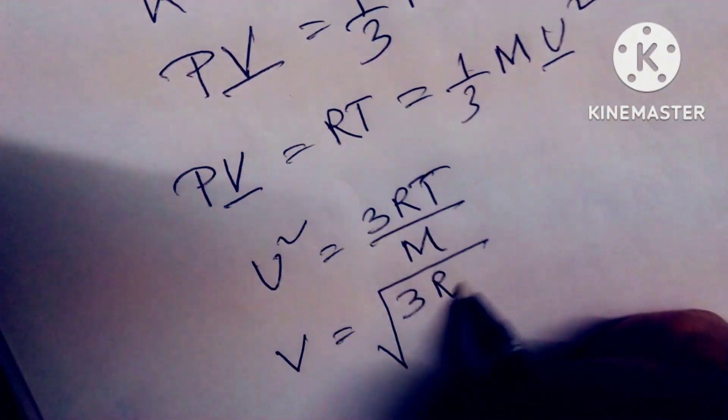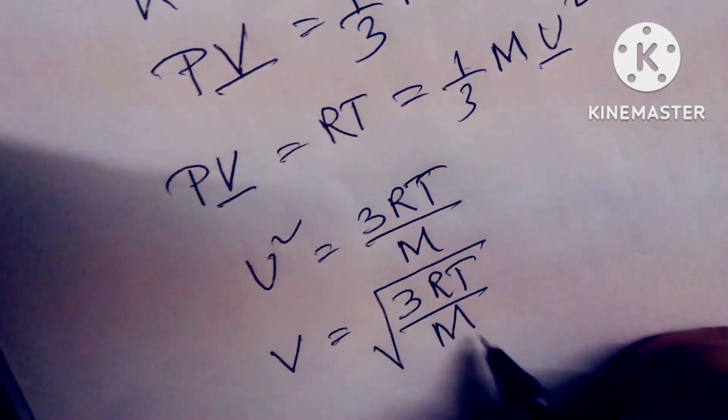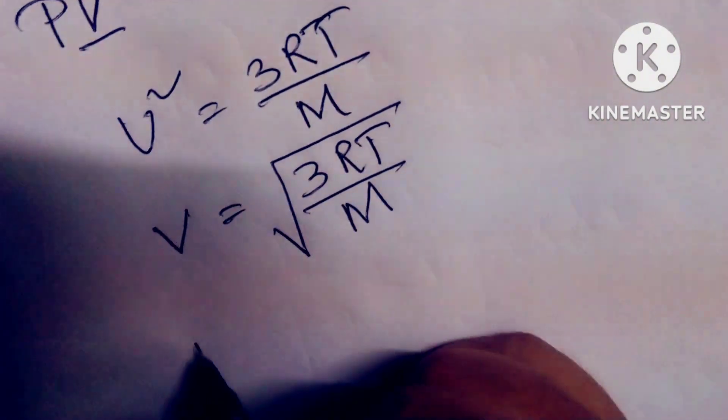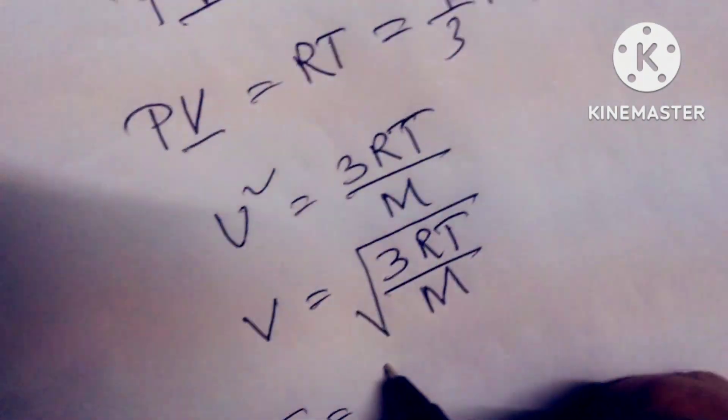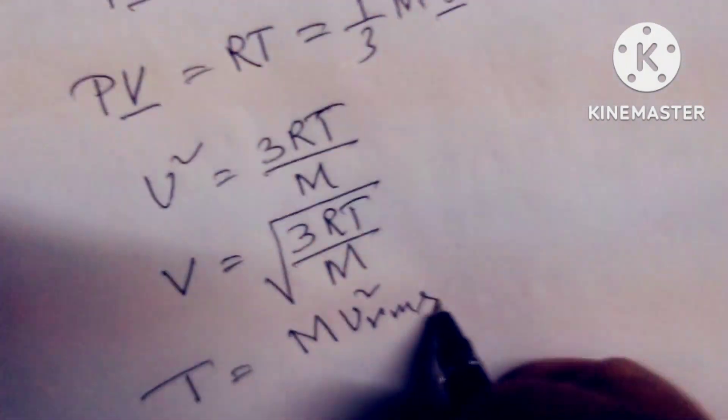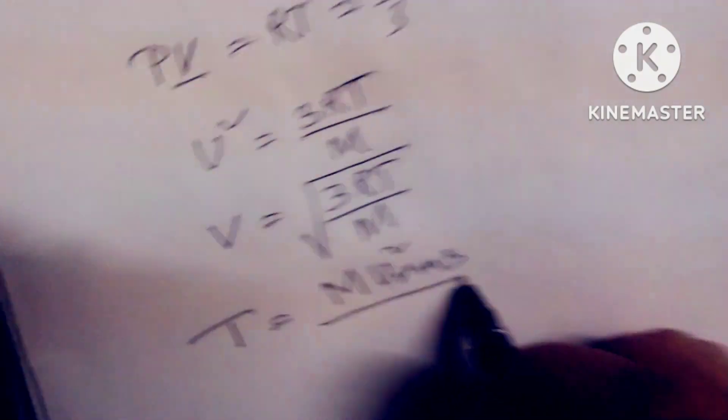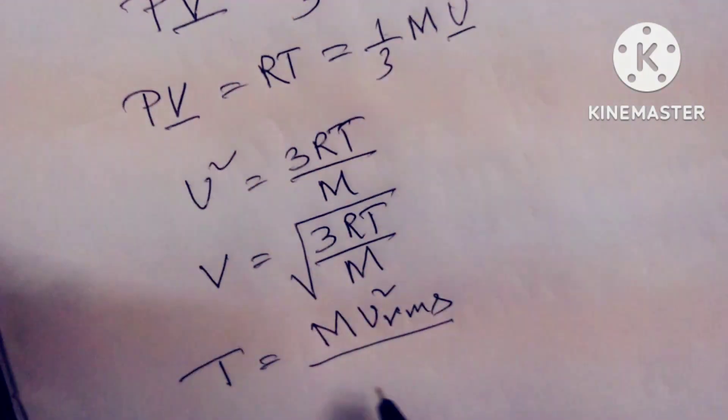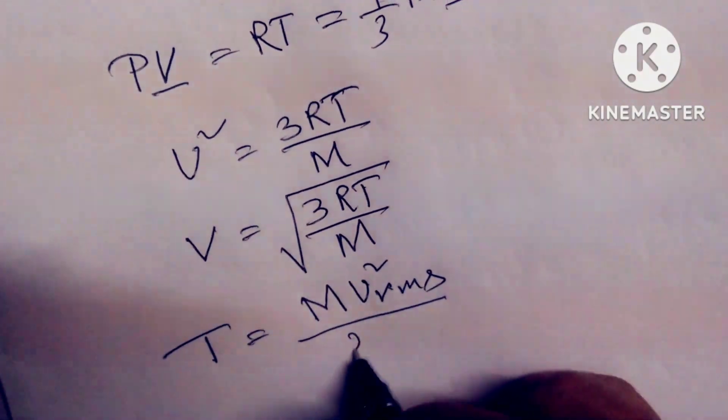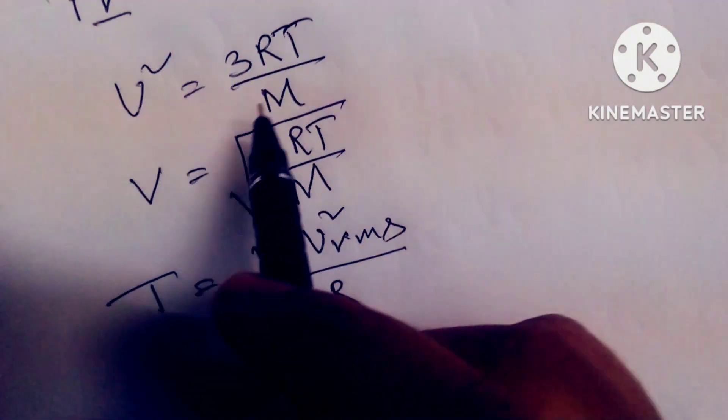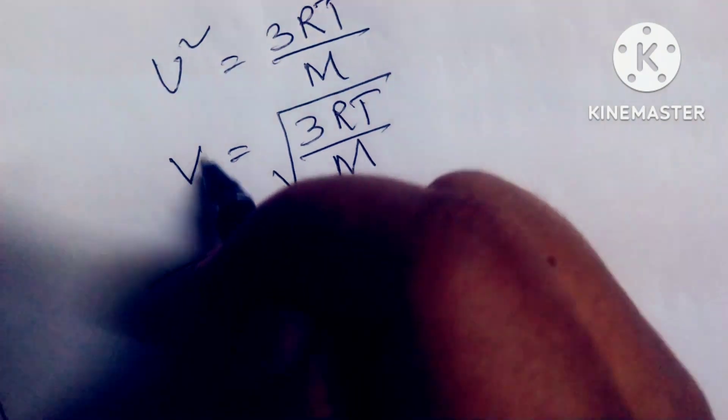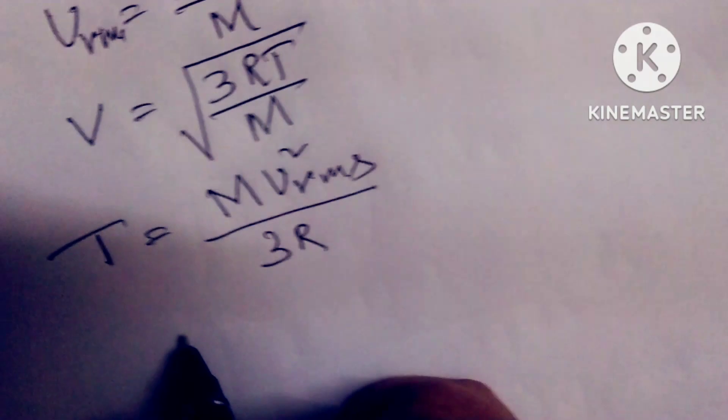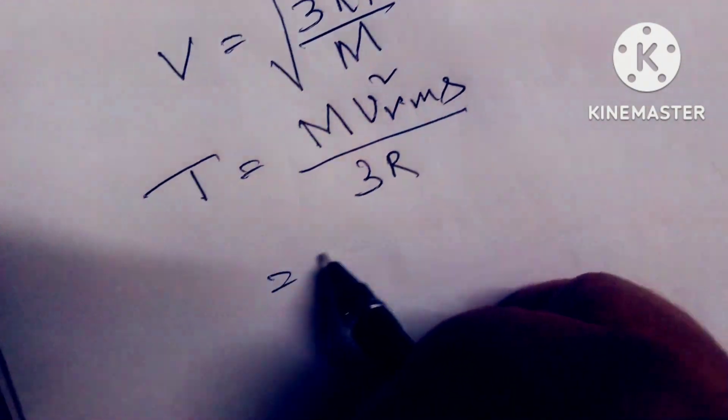So V equals the square root of 3RT divided by M. And temperature T equals MV² divided by 3R. V² here is the RMS velocity, this velocity is the RMS velocity.